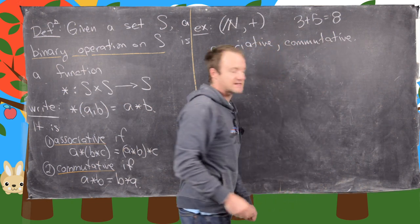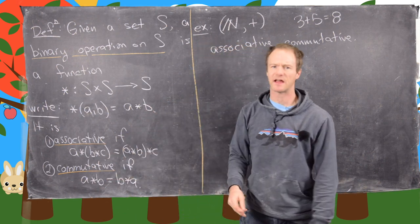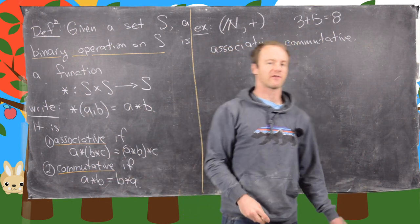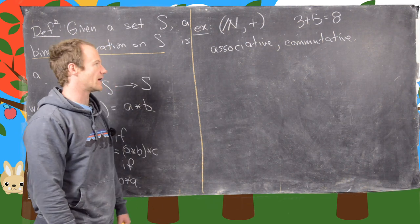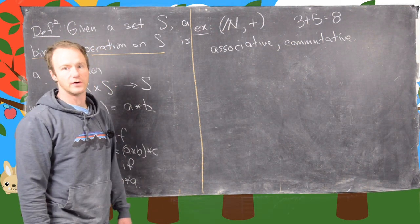Now notice I haven't said that there needs to be anything like an identity or inverses or whatever. And in fact, in the natural numbers, there is no identity because there's no zero and there are no inverses because there are no negative numbers.